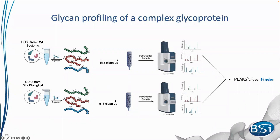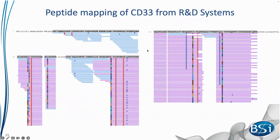The general protocol is straightforward — standard reduction, alkylation, digestion, C18 cleanup, then injection on our TIMSTOF Pro using Method 2. The peptide mapping of CD33 from R&D Systems shows it is very highly glycosylated — purple bars represent glycopeptides and blue bars represent non-glycopeptides. We identified six different glycosylation sites across the protein, including two directly adjacent sites where we were able to resolve different glycans attaching specifically to one site and not the other.